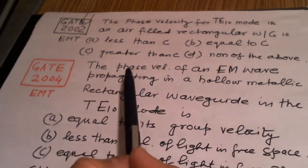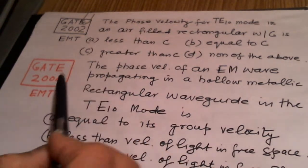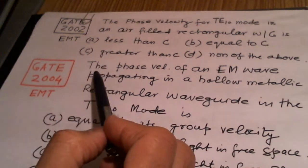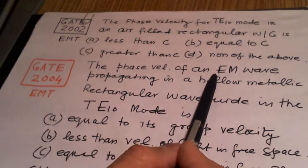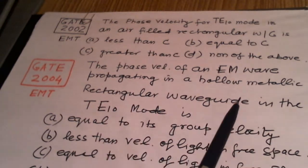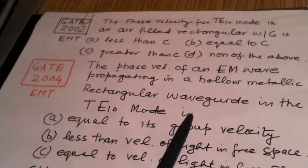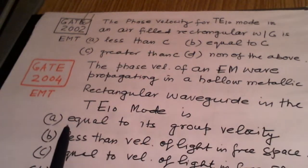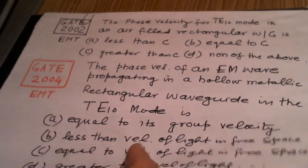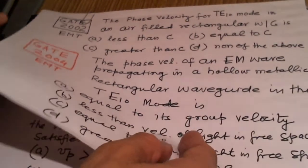Then, another problem which has appeared in GATE 2004, again in electromagnetics area, states as the phase velocity of an EM wave propagating in a hollow metallic rectangular waveguide in the TE10 mode is. The first option is A, equal to its group velocity, B, less than velocity of light in free space, and equal to velocity of light in free space, and the fourth option D says it is greater than the velocity of light.